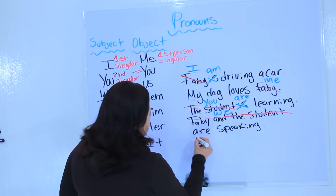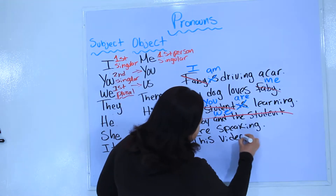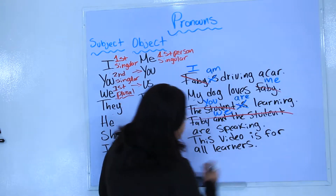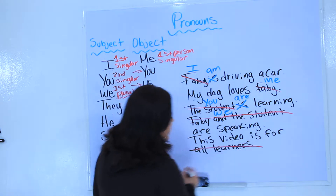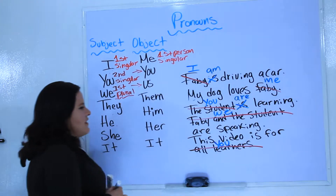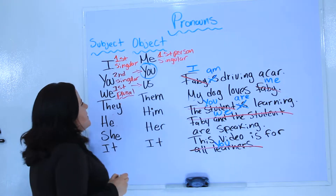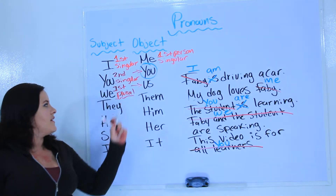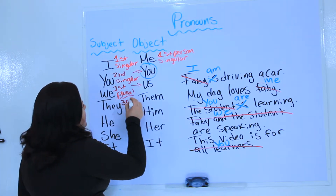For example, this video is for all students or all learners in the world. Instead of using all learners, I could say this video is for you. In this case, I'm using you, which can also be plural. So we have I — first person singular; you — second person singular; we — first person plural; they — third person plural.